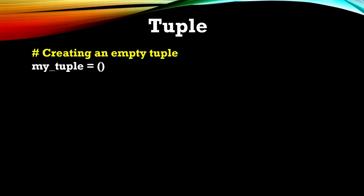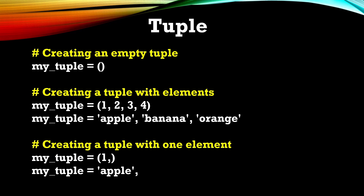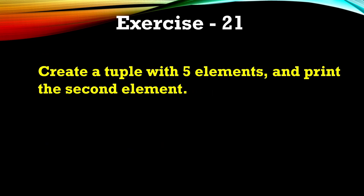Let's see the syntax of a tuple. To create an empty tuple: my_tuple = (). To create a tuple with elements, you add values separated by commas, for example: my_tuple = ('apple', 'banana', 'orange'). You can also create a tuple with one element — to do that, you write the value followed by a comma, like ('value',). That trailing comma is what makes it a tuple.